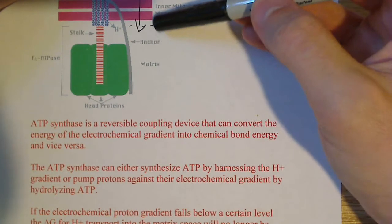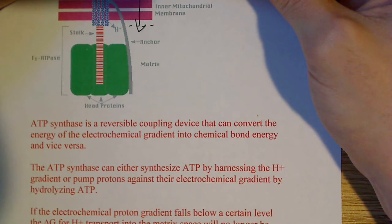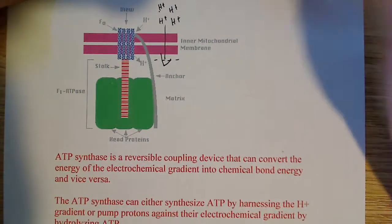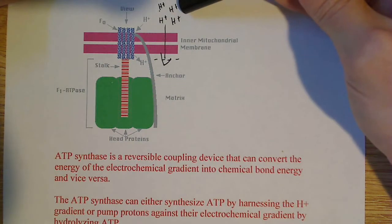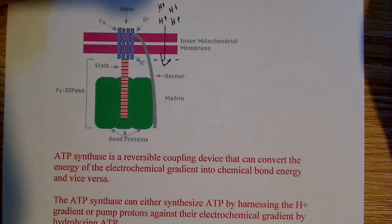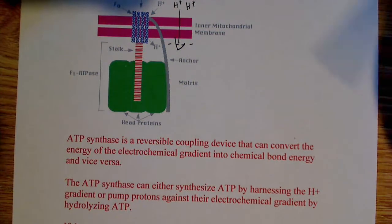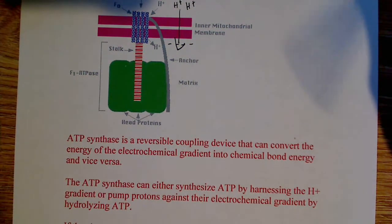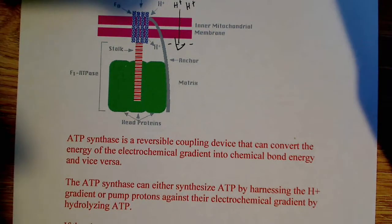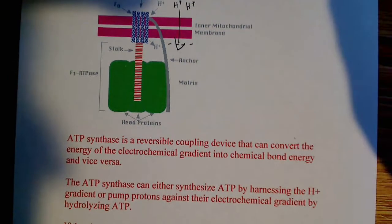The matrix is negatively charged, so by the electrical gradient, the protons also want to flow back in. By using the energy from these protons flowing back through this ATP synthase, it causes this protein to rotate — it essentially causes conformational changes in the ATP synthase that drive the production of ATP.